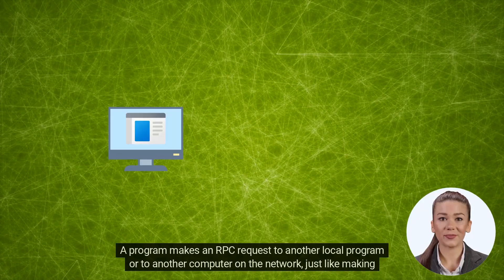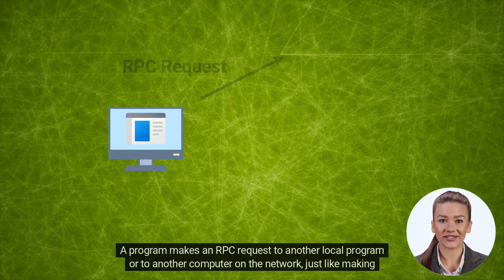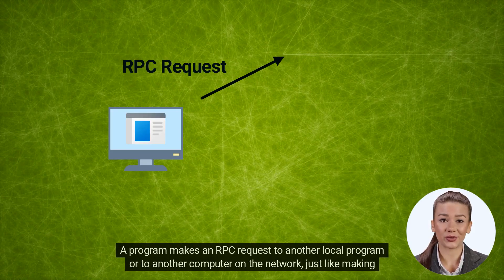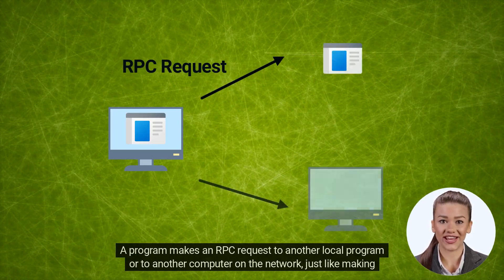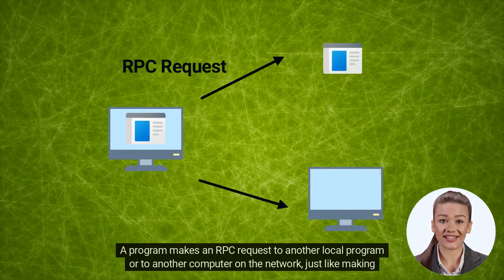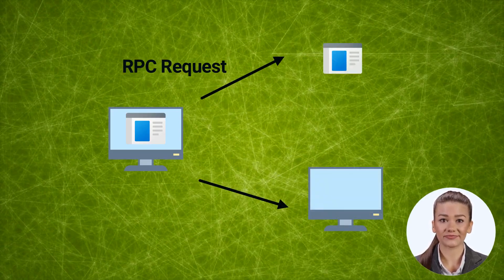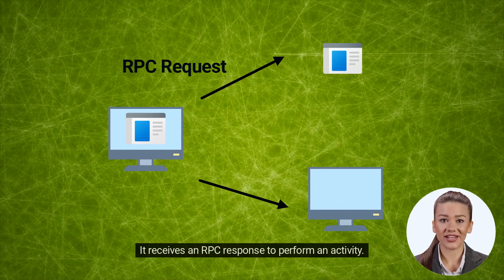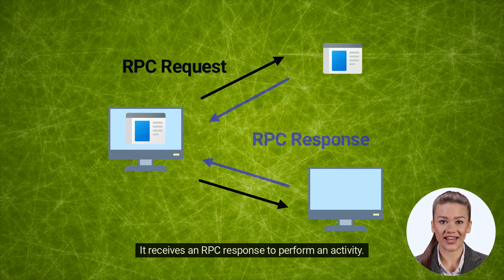A program makes an RPC request to another local program or to another computer on the network, just like making a function call. It receives an RPC response to perform an activity.